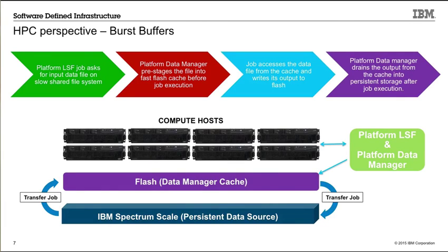We've talked about data staging with Platform Data Manager, including caching and out-of-band transfers. Now let's look at one possible application in the form of a burst buffer for HPC. Here, there's a tiered storage hierarchy managed with IBM Spectrum Scale, which is based on GPFS technology. By using Platform Data Manager, we can help ensure that the burst buffer is kept warm — meaning the necessary data is there before the job starts — and that any results written to the burst buffer are staged out efficiently and out-of-band from the job. IBM Spectrum Scale supports automatic migration of data between storage tiers based on access patterns, which is called AFM, or Automatic File Migration.